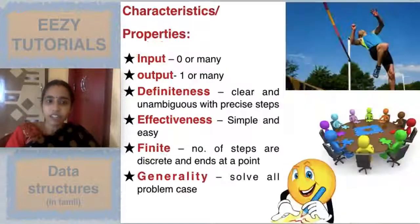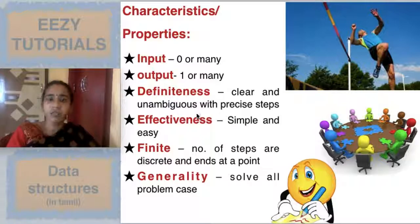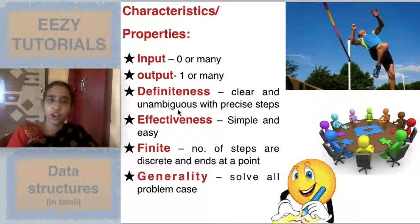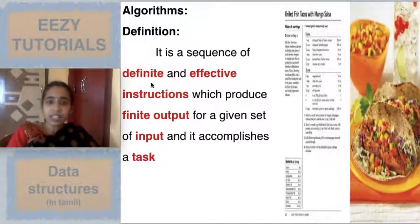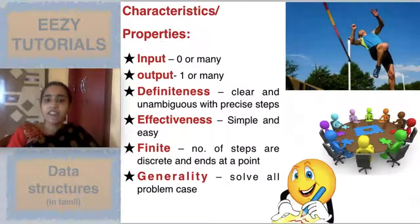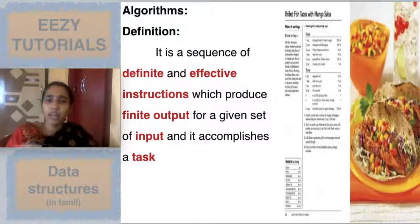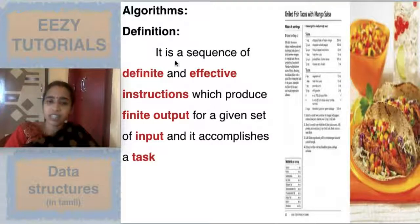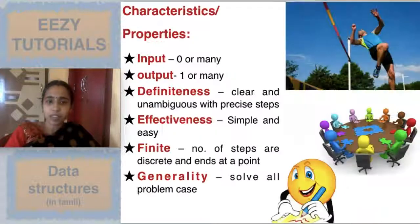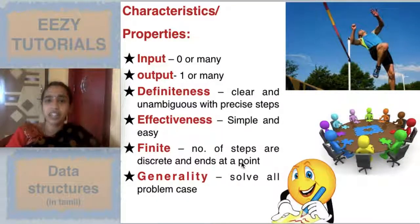That is definiteness — it should be clear and unambiguous. Unambiguous means not leading to more than one way of perception. Effectiveness means it should be very simple and easy; you should not introduce complications. In the most simple way, you have to produce the result — that is effectiveness.